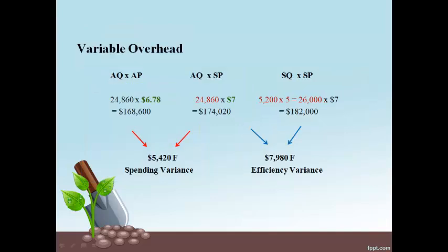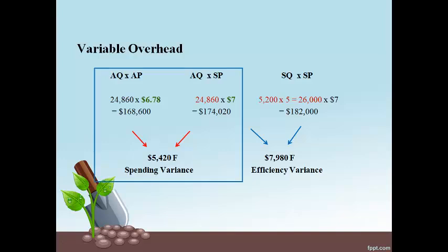The quantity used to analyze variable overhead is direct labor hours because direct labor hours is the overhead activity. On the left is the difference in cost that occurs because the cost of manufacturing overhead for each direct labor hour is different. The company estimated an overhead rate of $7 per hour, and the actual cost per direct labor hour was $6.78. The savings of $0.22 for each hour worked results in a total savings of $5,420.